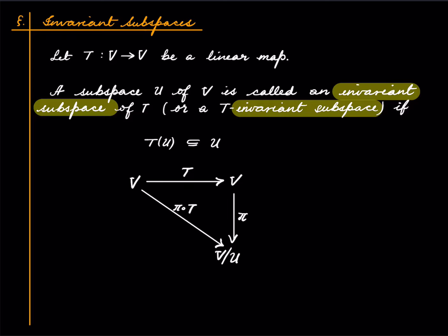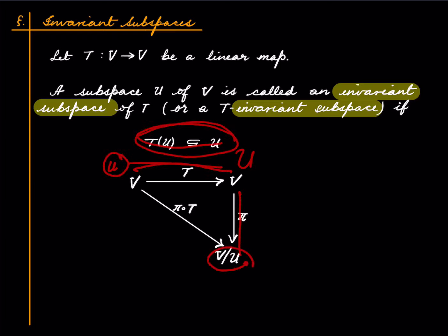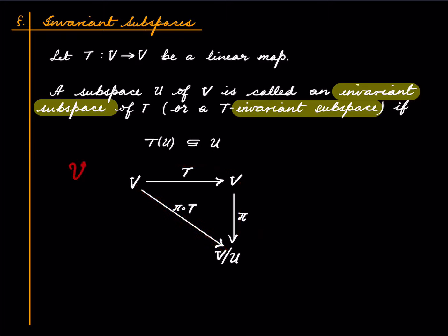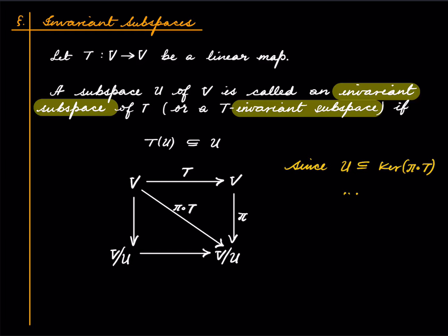Given a T-invariant subspace U, we compose T with the natural projection pi onto V mod U. Every element of U is killed by this composed map: pick u in U, it maps into U under T, and then goes to zero under pi. So U is contained in the kernel of pi composed with T, and we can apply what we just learned: we get a factoring giving a map from V mod U to V mod U.